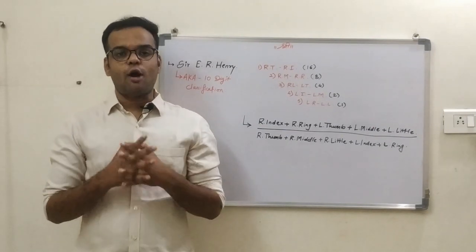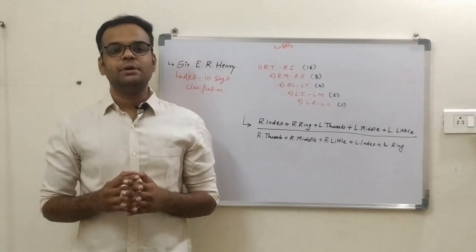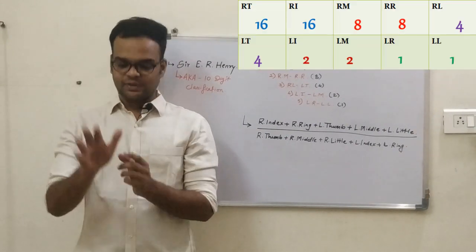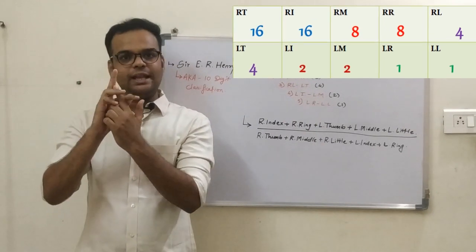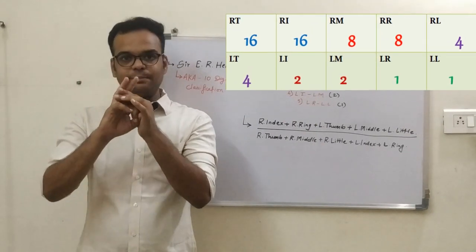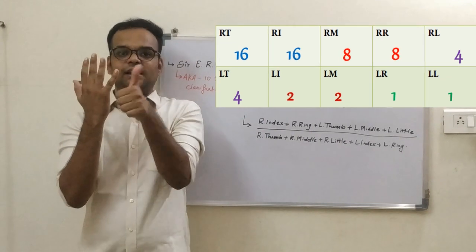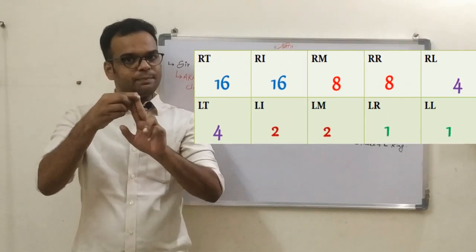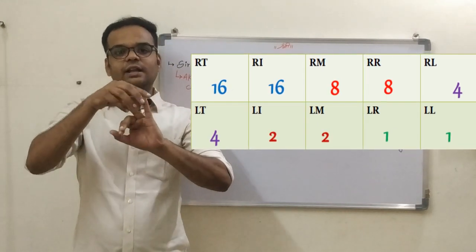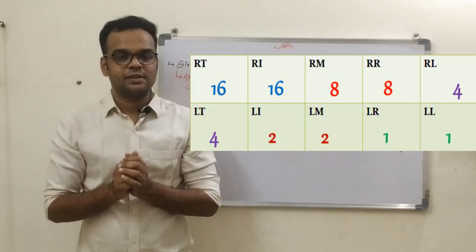First step to obtaining the primary classification is to pair up the fingers in this manner: right thumb and right index is the first pair, right middle and right ring is the second pair, right little and left thumb is the third pair, left index and left middle is the fourth pair, left ring and left little is the fifth pair.